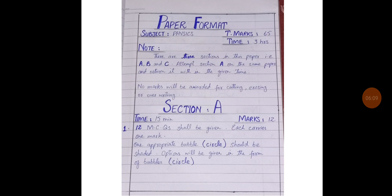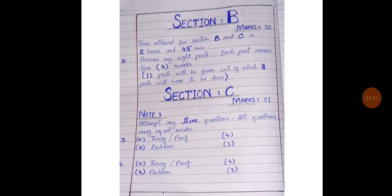Let's start the heading of section A. For section A, we have only 15 minutes and in 15 minutes, we will return our answer sheet. Marks will be 12. Here 12 MCQs shall be given. Each carries one mark. One appropriate bubble or circle should be shaded. Options will be given in the form of bubbles or circle.